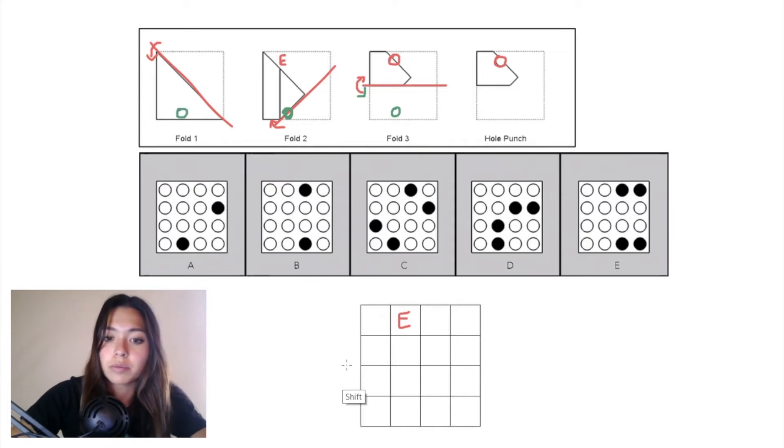When we draw that same horizontal plane from fold three in our grid and reflect where that hole punch was across that plane, it ends up down here.